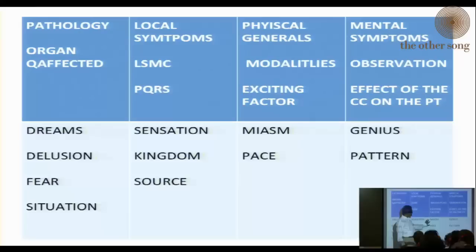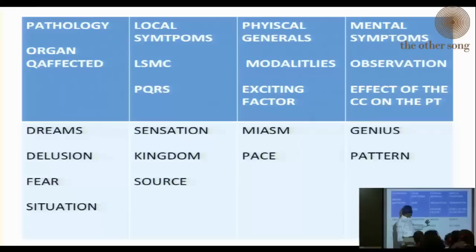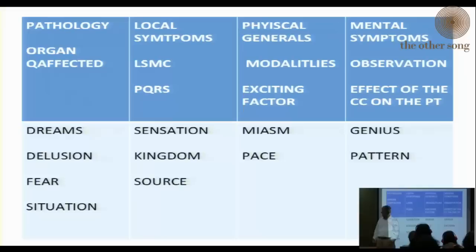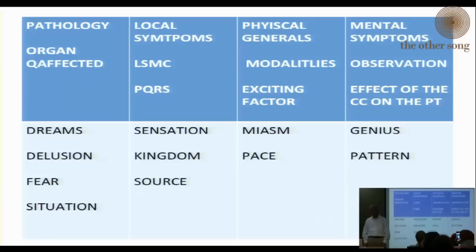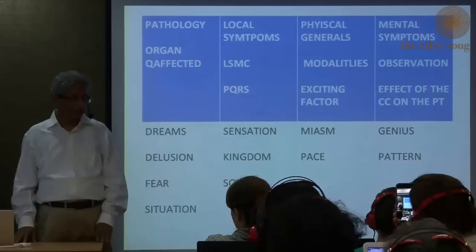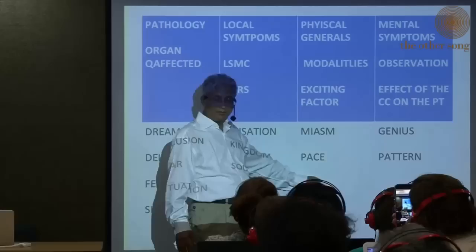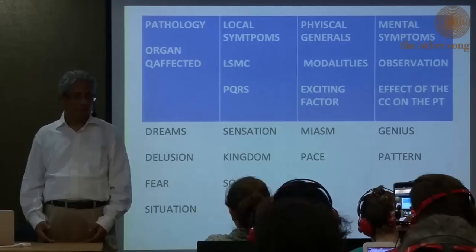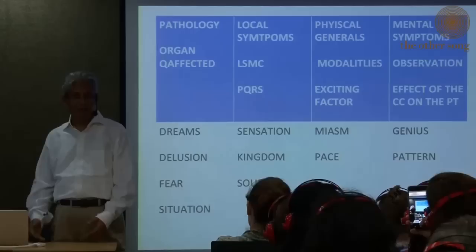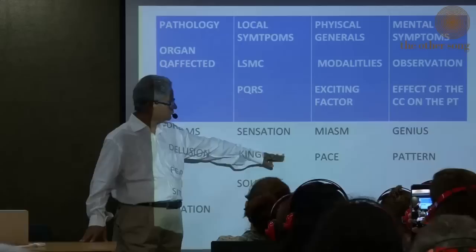Then next is the miasm or the pace of the disease. Is it a very desperate situation? Is it a very solvable situation? Is it an acute situation? Is it a hectic situation? Is it a chaotic situation? What does he feel? The feeling of miasm or pace is expressed in all the areas of the patient's life — in the pathology, in the complaint, in his mind state, in his situation, in his dream. Everywhere this miasm is expressed.